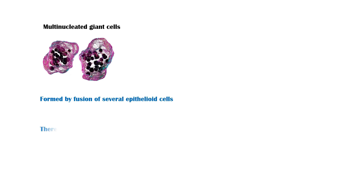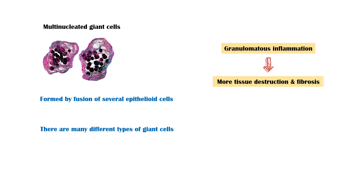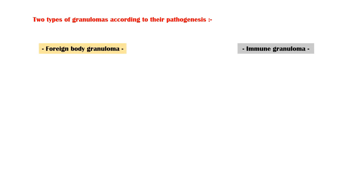Multinucleated giant cells are formed by the fusion of several epithelioid cells, and there are many different types of multinucleated giant cells, which will be discussed later in this video. Granulomatous inflammation causes more tissue destruction than the usual chronic inflammatory response due to the high microbial killing ability of epithelioid cells. There are two types of granulomas according to their pathogenesis: foreign body granuloma and immune granuloma.